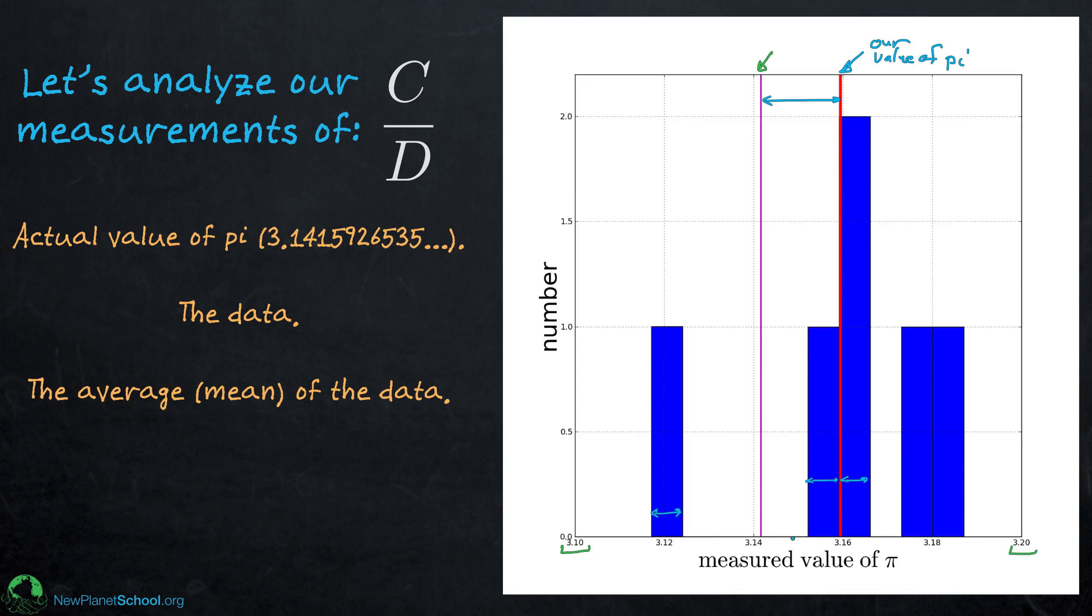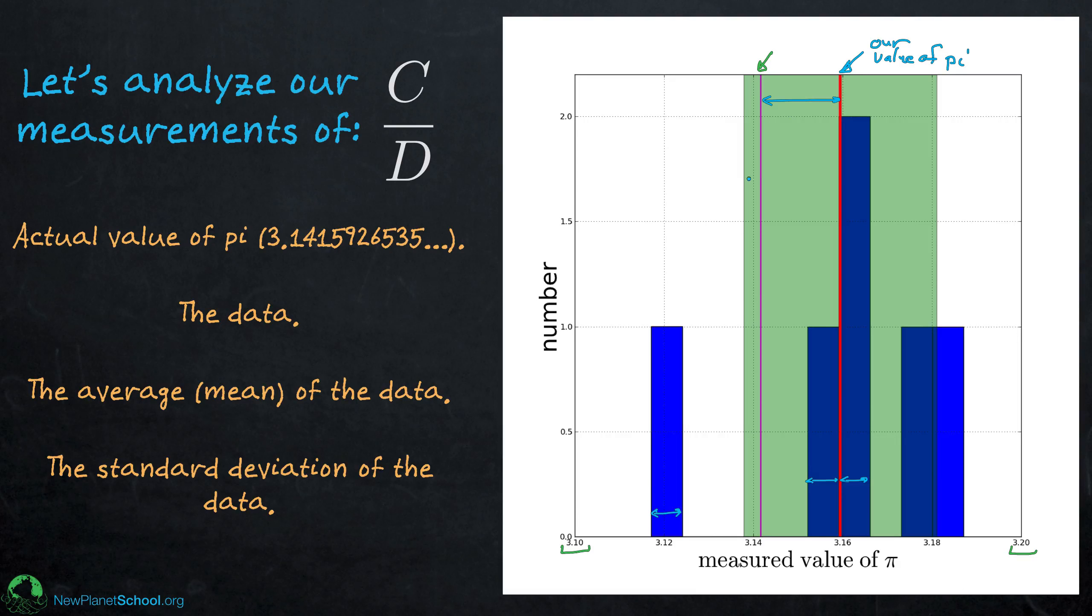It's about 3.16 instead of 3.1415926. So not too bad. But of course, in terms of what we can actually report, that's our average, but how confident are we? We also computed the standard deviation, and this is the standard deviation of the data, this green shading.